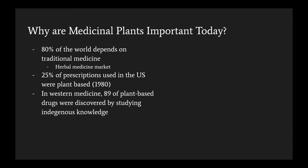After hearing about all of this traditional medicine, one might wonder why it's important today, since modern medicine is so different and focuses more on scientific aspects rather than spiritual ones. One might think herbal remedies and medicinal plants are obsolete — but that's simply not true. 80% of the world still depends on traditional medicine, exemplified by the global herbal medicine market with an incredible economic value of 60 billion US dollars. Additionally, in the U.S., 25% of prescriptions were plant-based in 1980, and in Western medicine, 89 plant-based drugs were discovered by studying indigenous knowledge.